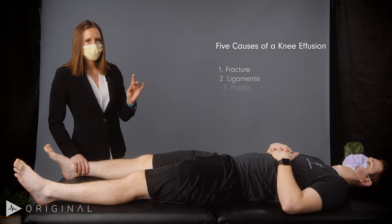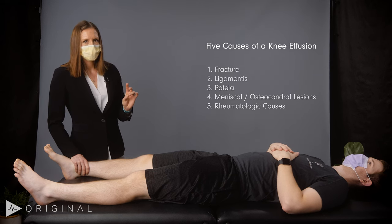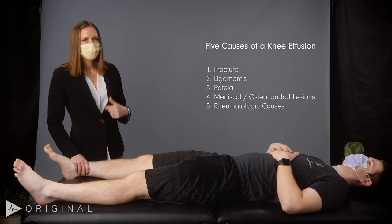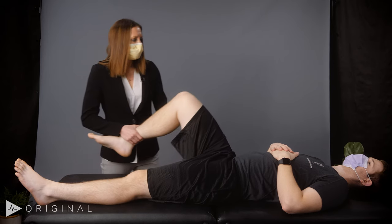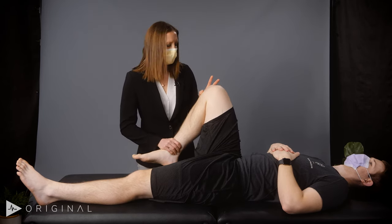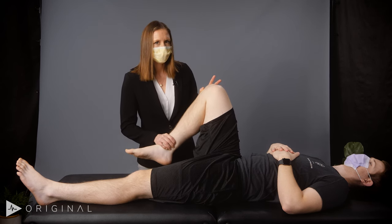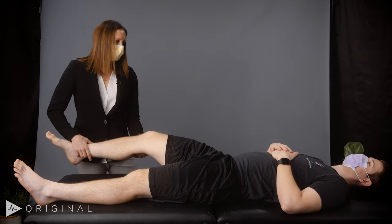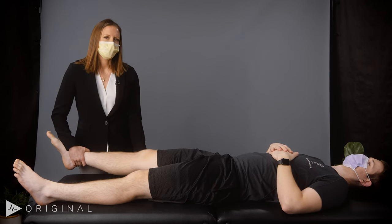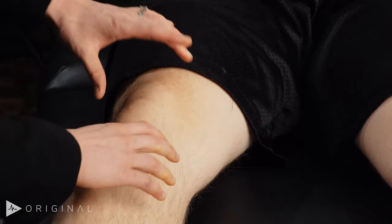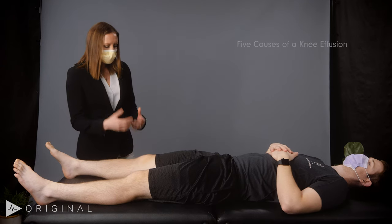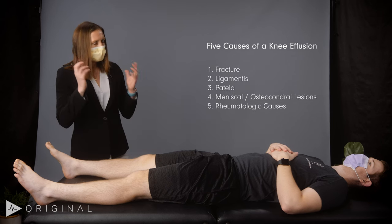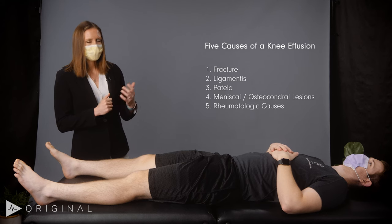After ruling out fracture and patellar causes, move to range of motion to assess for rheumatologic causes and meniscal pathology. Take the knee into flexion—hyperflexion causing a pinching sensation should cue you into meniscal or osteochondral lesion. Take them into extension and do a slight bounce home test, testing for posterior joint pathology like meniscal or focal cartilage lesion. If someone has significant pain with range of motion, that's the time to think about tapping the knee to rule out rheumatologic causes—gout, pseudogout, or septic joint. We've now thought about fracture, patellar causes, meniscal, osteochondral, and rheumatologic. Now we're left with ligament.